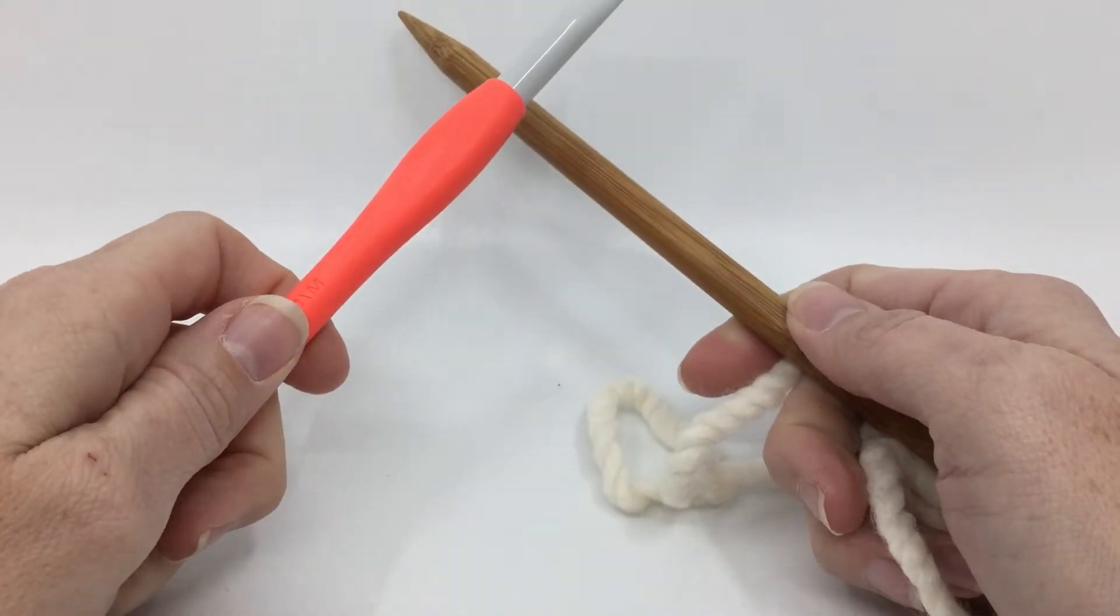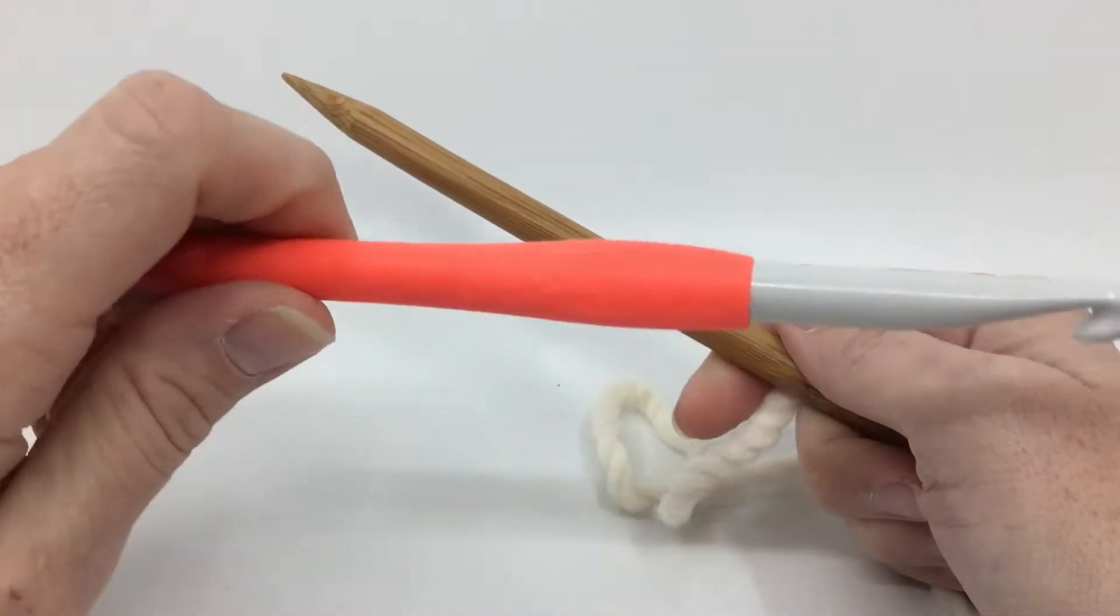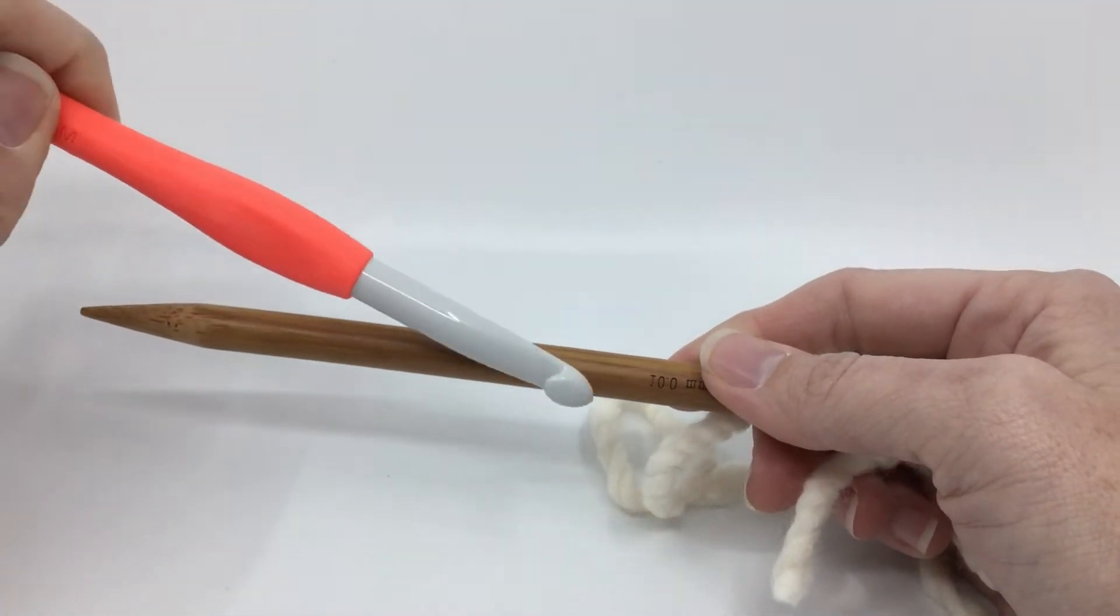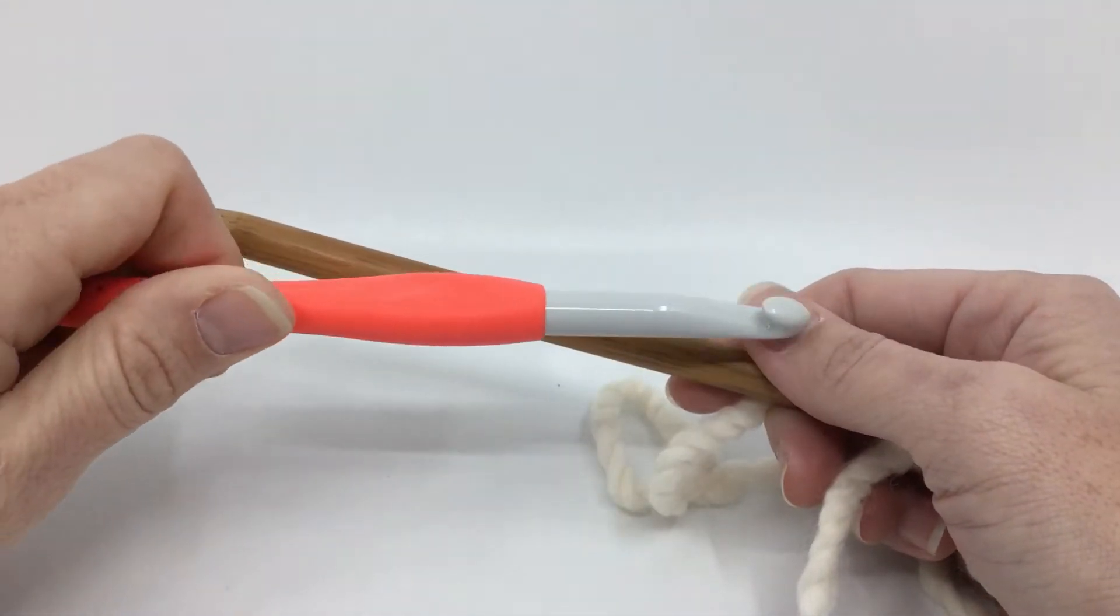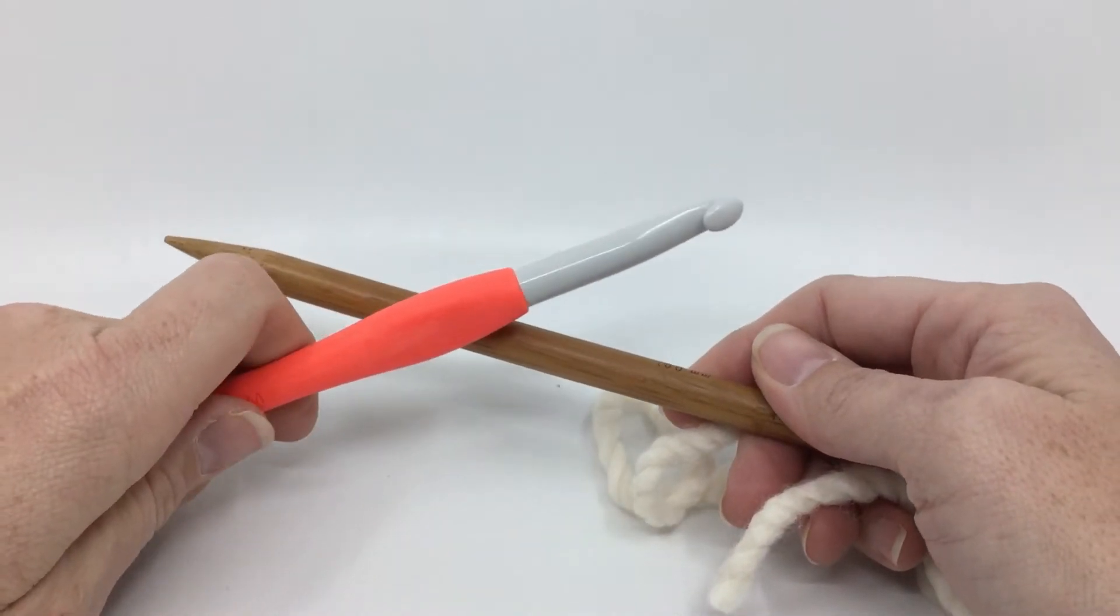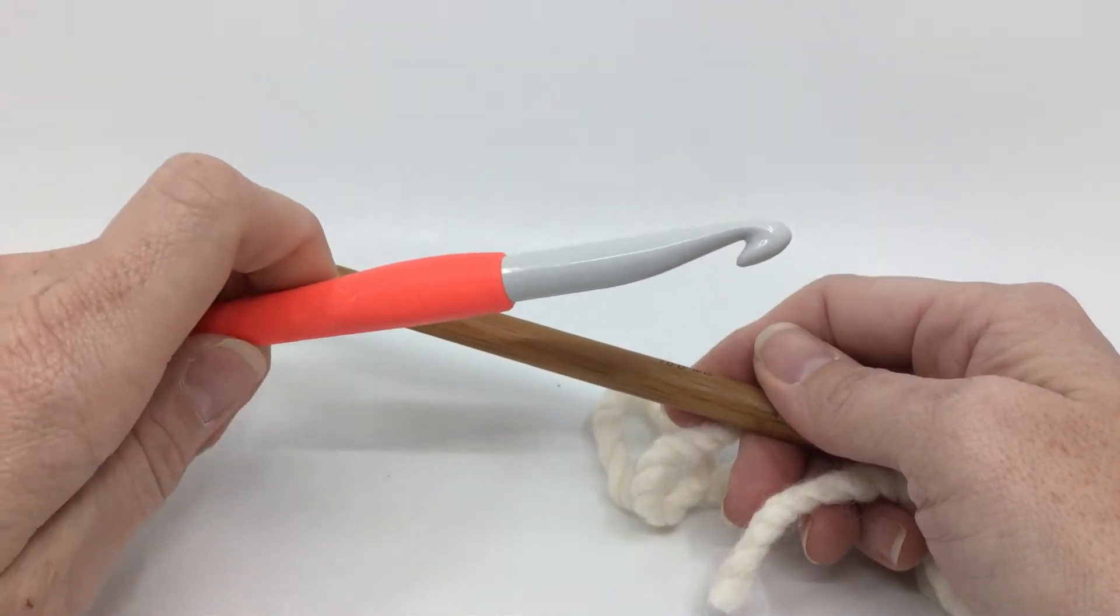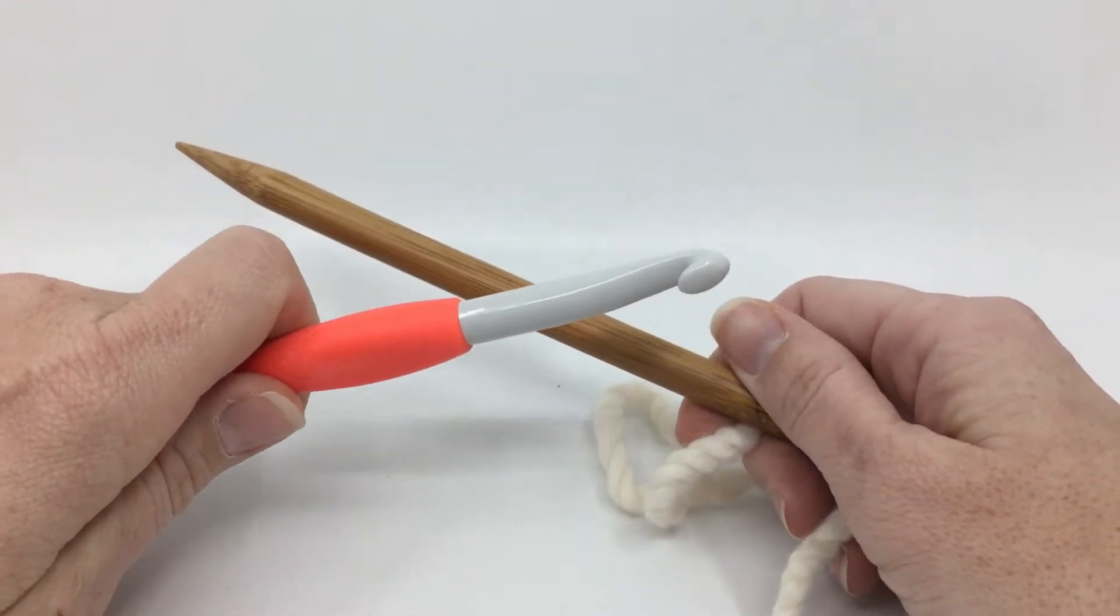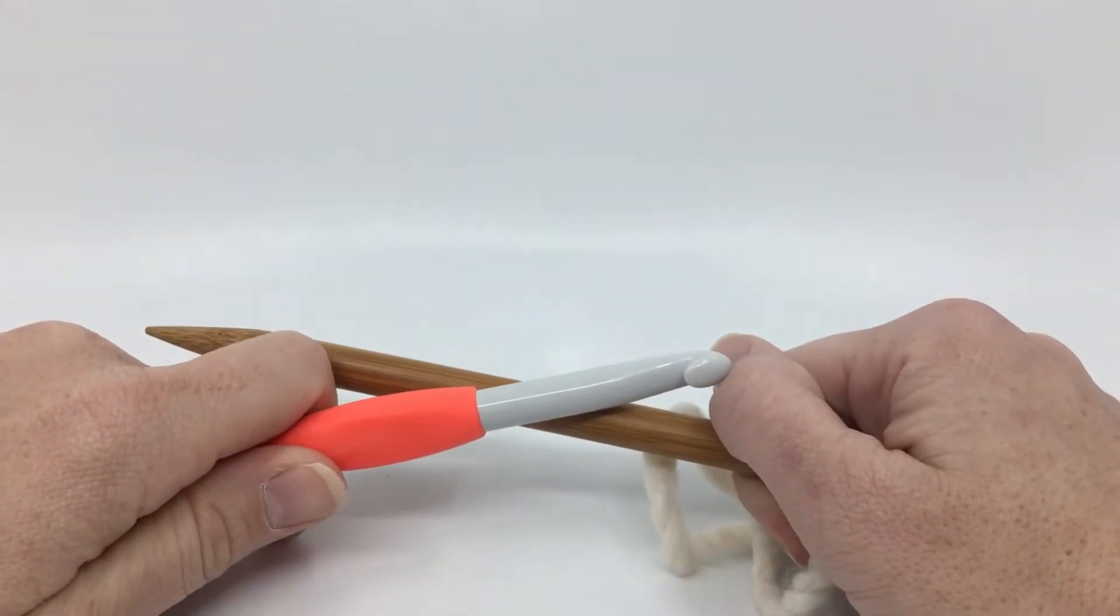So what is a crochet cast on? It's exactly what it says. You're going to use your crochet hook to cast on your knitting stitches. This is not very popular with knitters who don't know how to crochet, but because you guys are crocheters, this is going to be super easy and probably one of your go-to cast ons from now on.